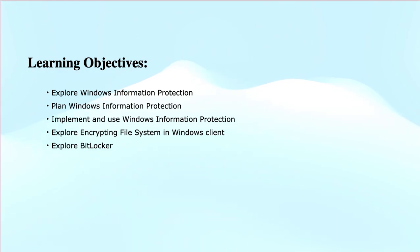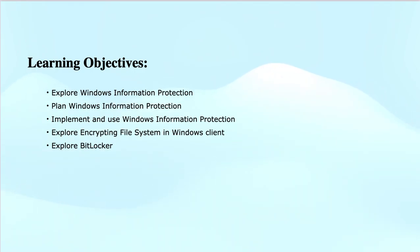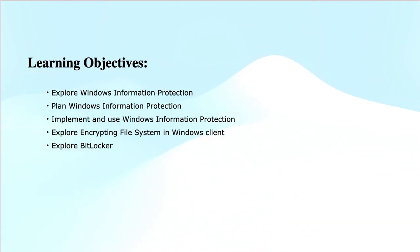You will also get hands-on experience with data loss prevention (DLP) to prevent accidental sharing of sensitive information, and see how Information Rights Management lets you control who can access, edit, or forward your important documents. The module covered here is Deploy Device Data Protection, and the module objectives include Windows Information Protection, Plan Windows Information Protection, Implement and Use Windows Information Protection, and explore Encrypting File System (EFS) in Windows clients and BitLocker Drive Encryption.